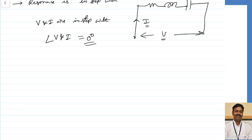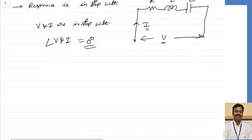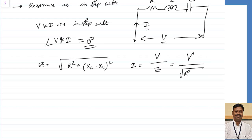For a series RLC circuit with values R, L, and C, voltage V is applied and current passes through. We can get the impedance Z = √(R² + (XL − XC)²), and the value of current I = V/Z = V / √(R² + (XL − XC)²). This is how we calculate the current.